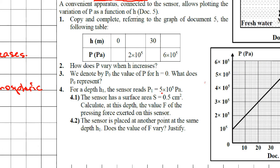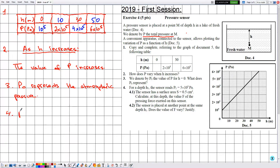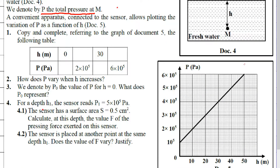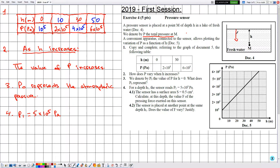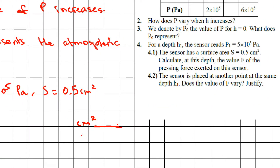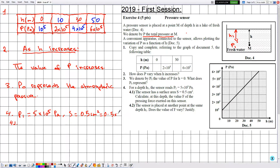Number four: for a depth H₁, the sensor reads P₁ = 5×10⁵ Pa. The sensor has a surface area S = 0.5 cm². To convert from cm² to m², we multiply by 10⁻⁴, giving S = 0.5 × 10⁻⁴ = 5×10⁻⁵ m².